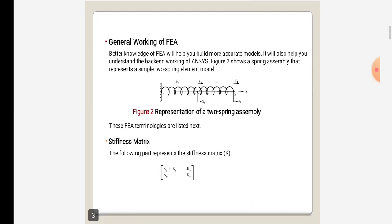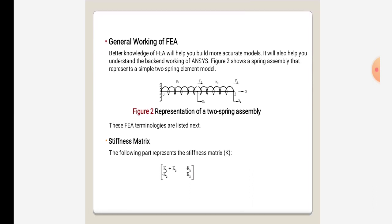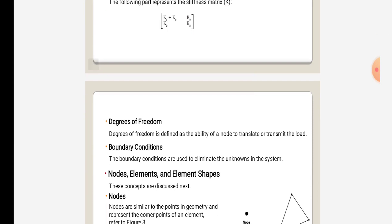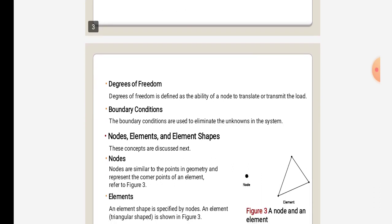In FEA, there are terms like stiffness matrix and degree of freedom. Degree of freedom is defined as the ability of a node to translate or transmit load. Boundary conditions are used to eliminate the unknowns in the system. There are different concepts like nodes, elements, and element shapes.